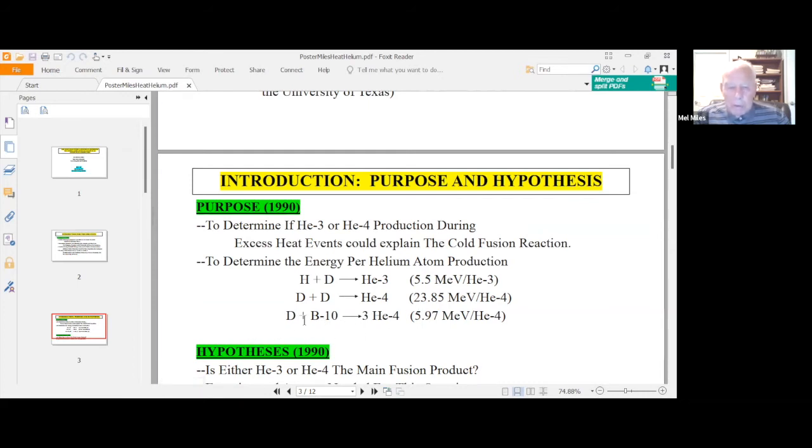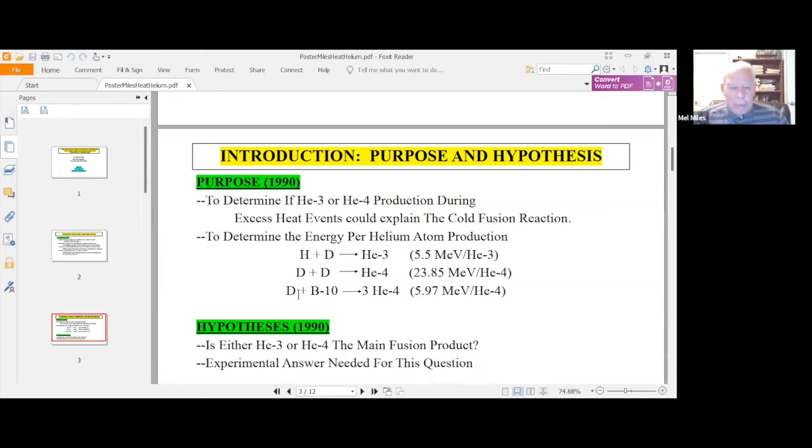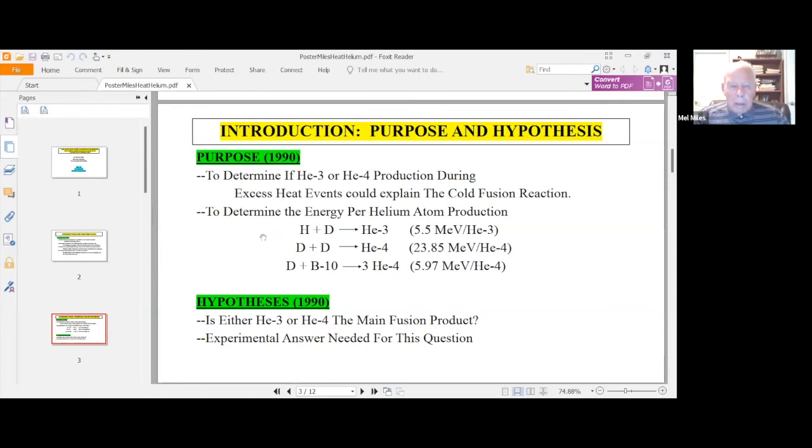Over here is the energy that each reaction gives. We're going to try to determine if we see helium-4, how does it match up with 23.85 MeV for helium-4. So that was our reason for experiment. And our hypothesis is helium-3 or helium-4, either one, the main fusion product. And the experimental answer needed for that, for this question.